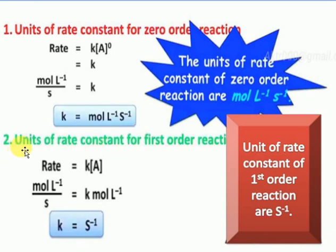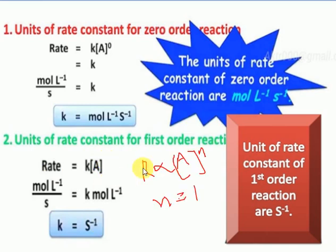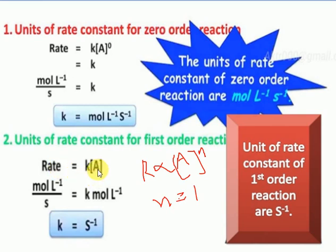Now, the unit of the rate constant for the first-order reaction. The rate of reaction is directly proportional to A to the power of N. For first-order reaction, N equals 1, so rate is proportional to A to the power of 1. Removing the proportional constant, rate equals K times A to the power of 1. To find units of K: K equals rate divided by concentration of A. Rate units are moles per litre per second, and concentration is moles per litre. Moles per litre cancels out.